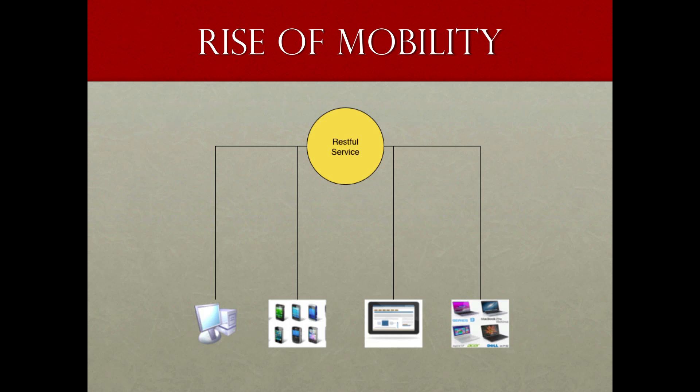If you rewind to the year 2000s, users at that point only consumed information on expensive computers and laptops, which essentially are the same thing. For the most part, that meant supporting Windows, Mac OS, and maybe Linux or UNIX. Fast forward to present day, we now have Windows, Mac OS, iOS, Android, Chrome OS, RIM which is Blackberry, and Nokia which is creating Windows 8 mobile phones. So we've jumped from supporting two to three OS platforms to supporting probably five or more.